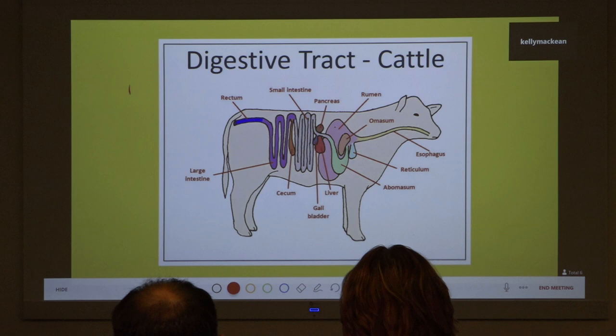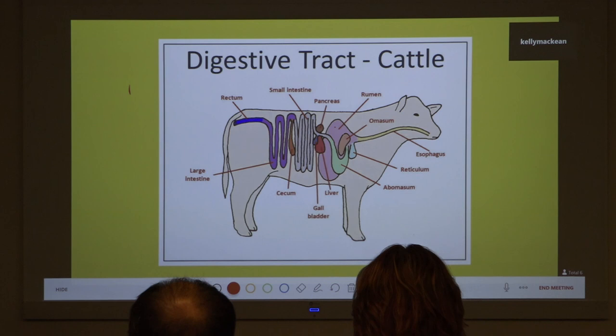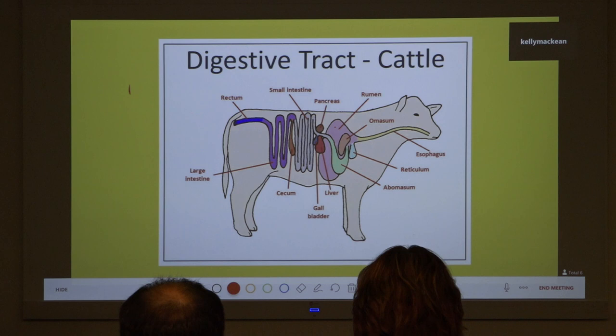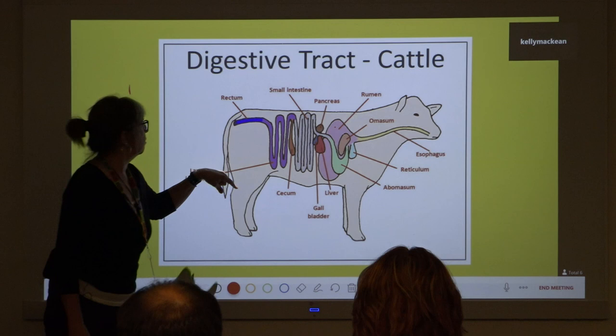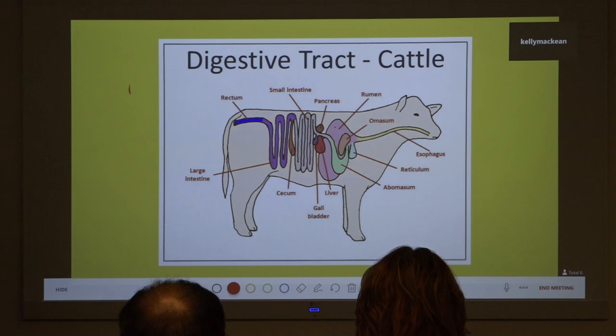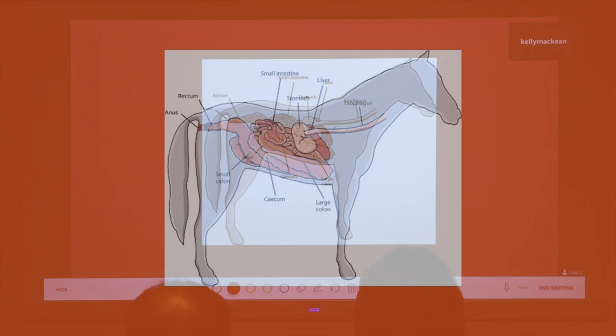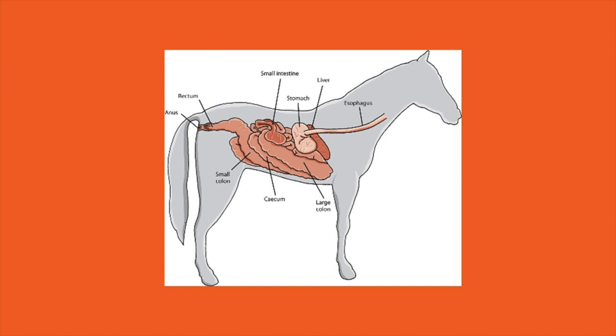The rumen holds gallons and gallons of material, and you don't want all that fluid dumping into the rest of the intestinal tract at once. The omasum has folds like leaves of a book and its job is to reabsorb a lot of fluid. Then the abomasum is what we'd call the true stomach - digestion proceeds there just like in other species. They have a slightly bigger cecum, small intestine, large intestine, and then out.